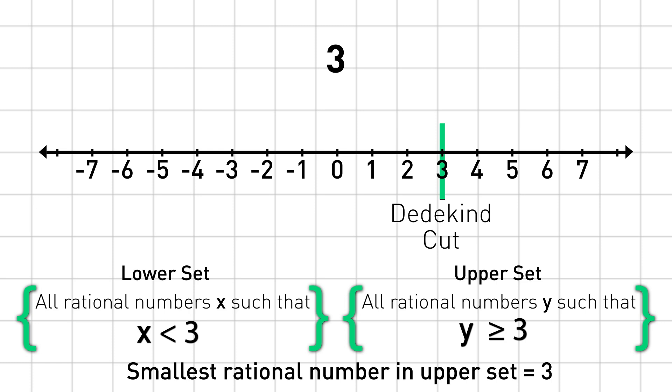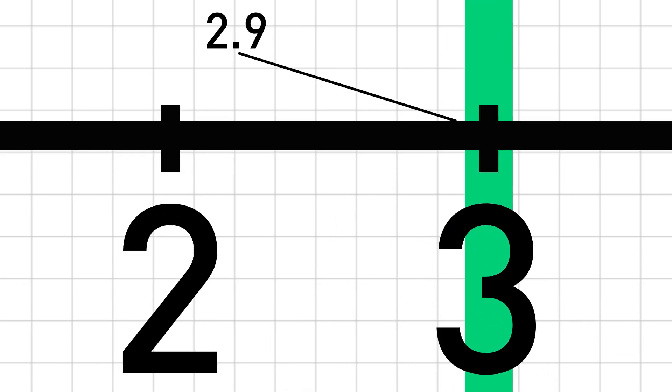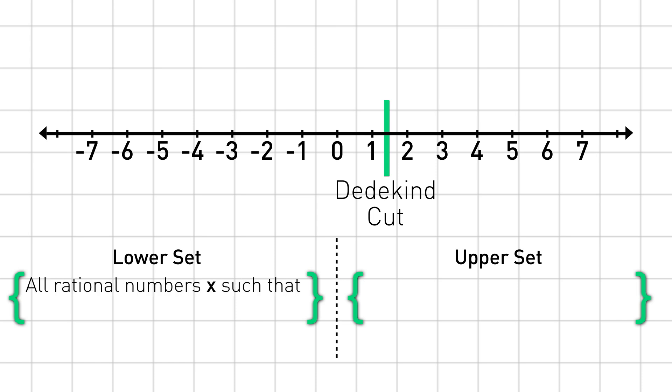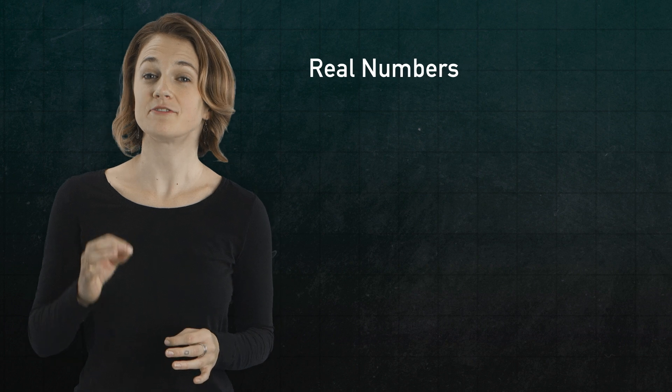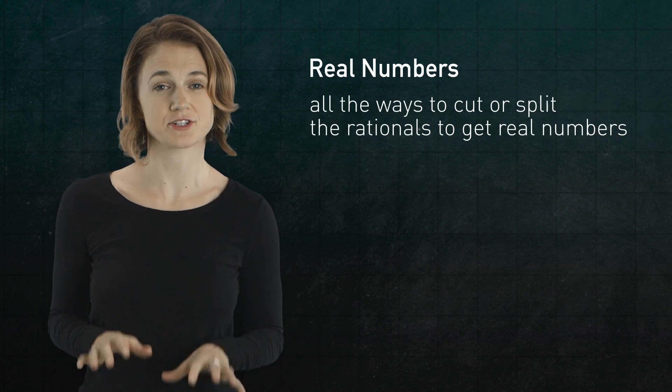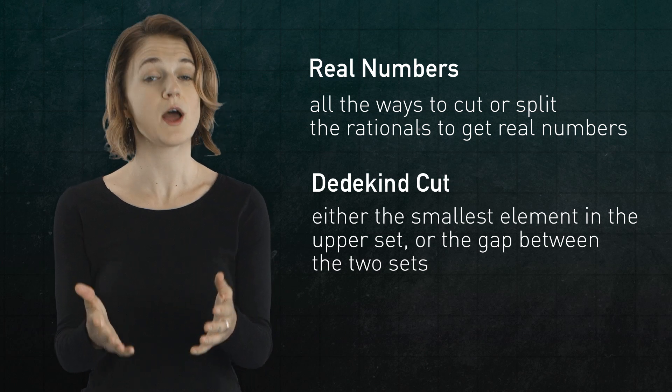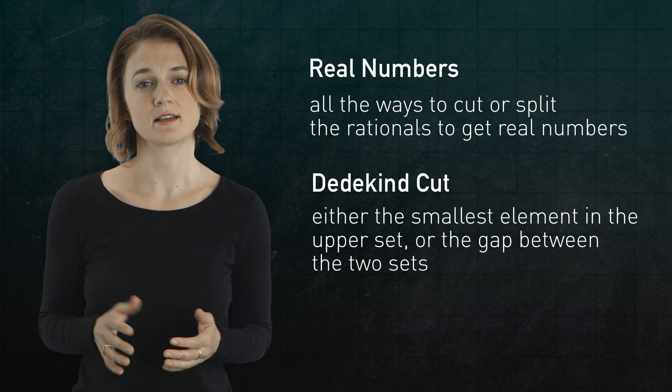For any rational number below three, for example 2.9, there will always be another rational number between that and three, like 2.95. Let's define a new cut. The lower set is all the rational numbers x, such that x squared is less than two, and the upper set is all the rational numbers y, such that y squared is greater than or equal to two. In this case, there is no smallest element in the upper set. It would be the square root of two, but that's not rational. This Dedekind cut defines the number square root of two. This particular way to split the rational numbers can be thought of as the definition of the real number square root of two. The real numbers are defined as all the possible ways to cut or split the rational numbers. The cut is identified with either the smallest element in the upper set, if one exists, like three, and otherwise it's the gap between the two sets, like the square root of two.